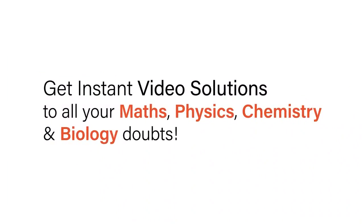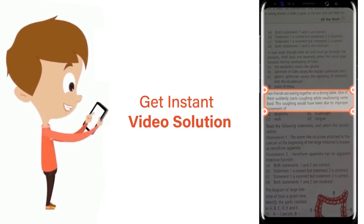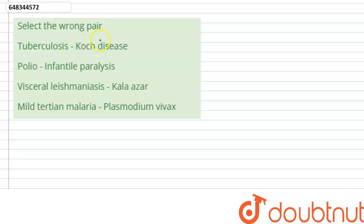With Doubtnet get instant video solutions to all your maths, physics, chemistry and biology doubts. Just click the image of the question, crop the question and get instant video solution. Download Doubtnet app today. Question: select the wrong pair.